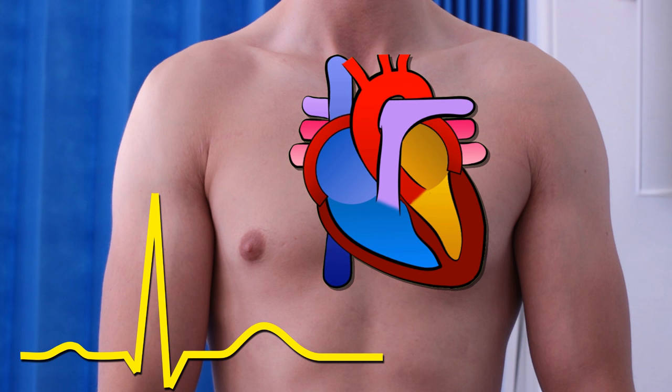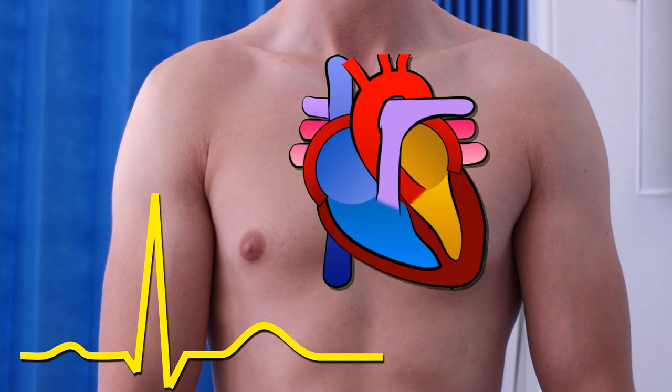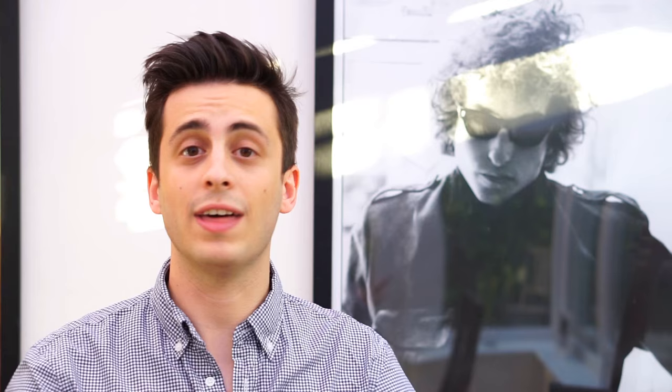If you're watching this in the distant future, we may already have a video covering just that. But if you're watching this in the distant past, it's enough to remember that the P-wave represents the atrial impulse and the QRS complex represents the ventricular impulse. That's it. That's ECG.